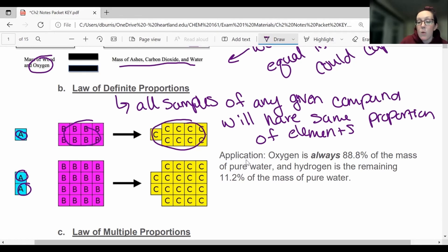Real life application, if I'm talking about water anywhere in the world, if I have a pure water sample, it is always 88.8% of the mass is oxygen and the 11.2% is hydrogen, always. Okay, so if it's water, it's that same proportion.